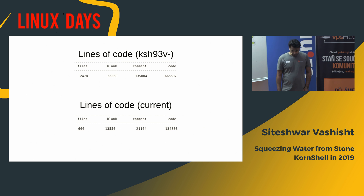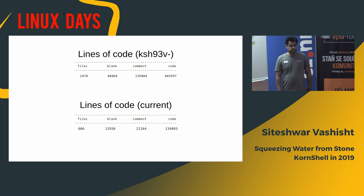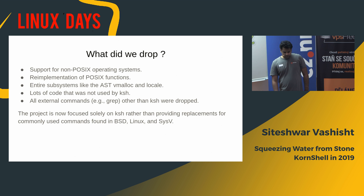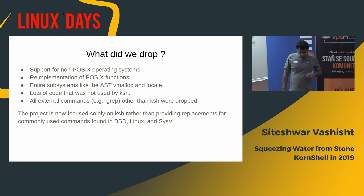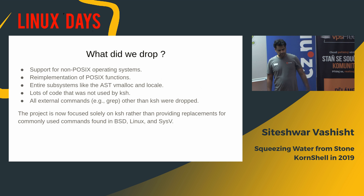Let's look at the statistics. The last version of KSH that came out from Bell Labs had around 665,000 lines of code. Currently in KSH upstream we have 134,000 lines of code — a significant reduction. We dropped almost 80% of the code. So what did we drop? KSH actually predates POSIX, and it had support for non-POSIX operating systems. To support those, it had re-implementations of many POSIX functions. We dropped support for all such operating systems and removed all those re-implementations.